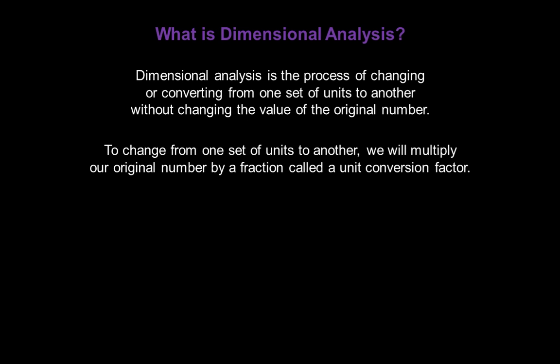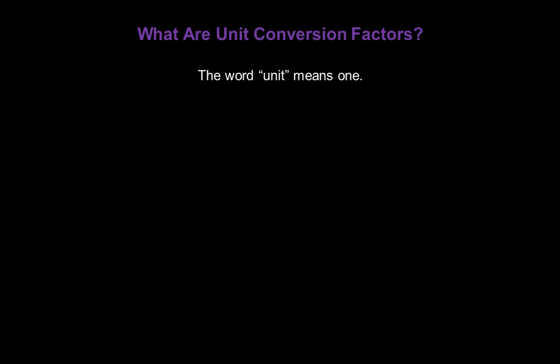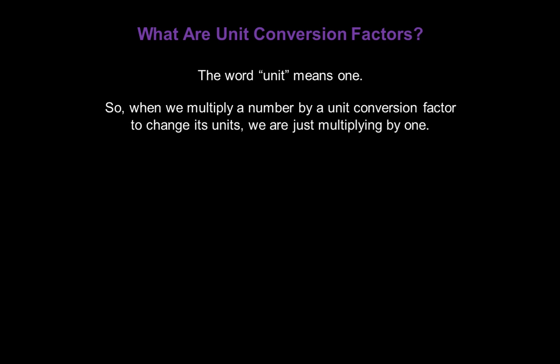To change from one set of units to another, we're going to multiply the original number by a fraction called a unit conversion factor. And that brings up a whole new question: what are unit conversion factors? The word unit means one. So when we multiply a number by a unit conversion factor to change its units, we're just multiplying by the number one.